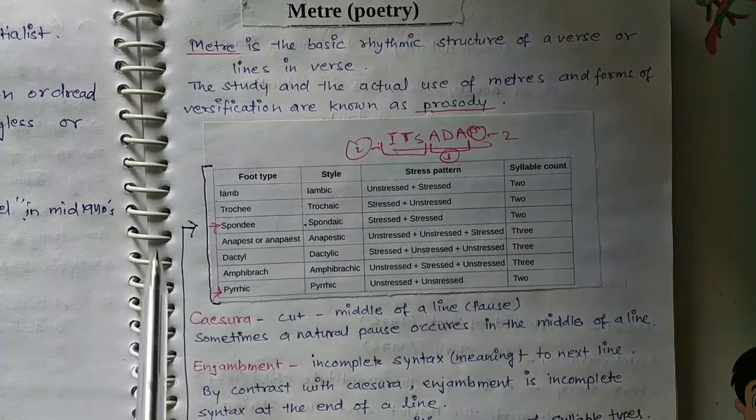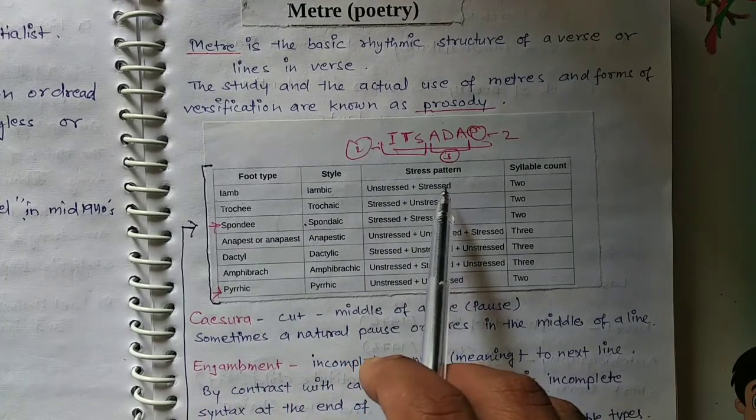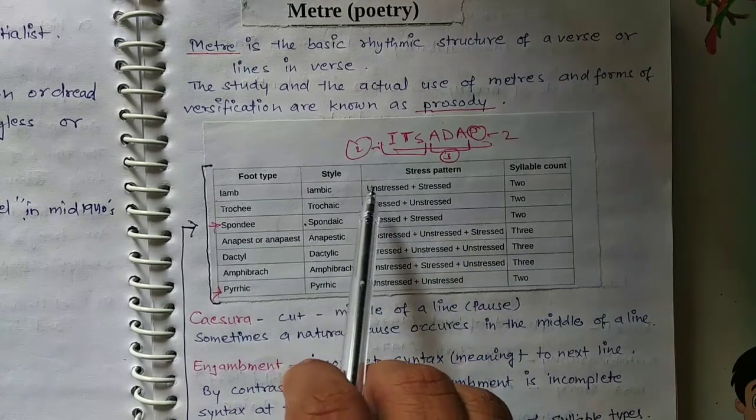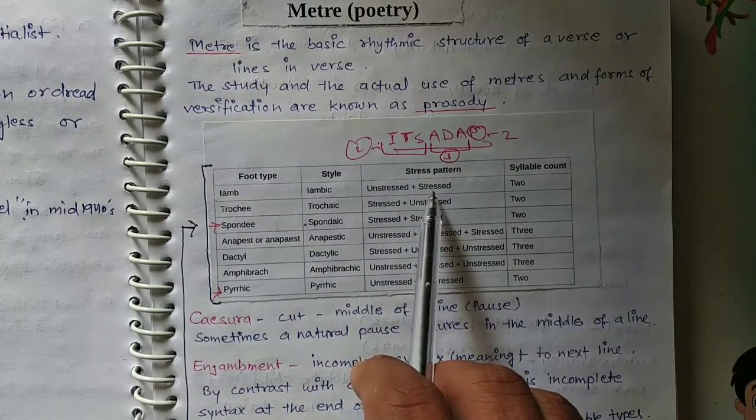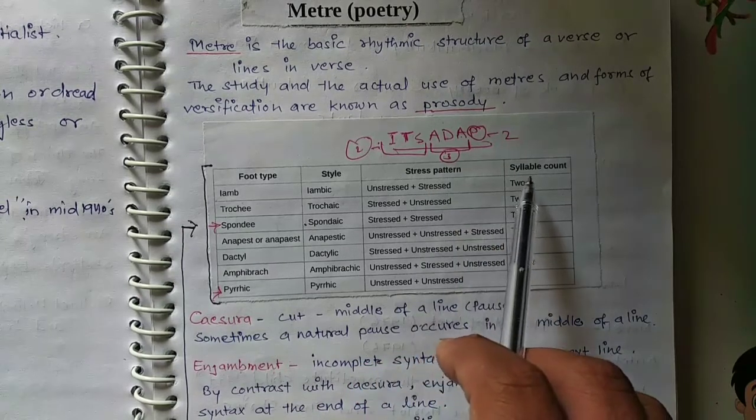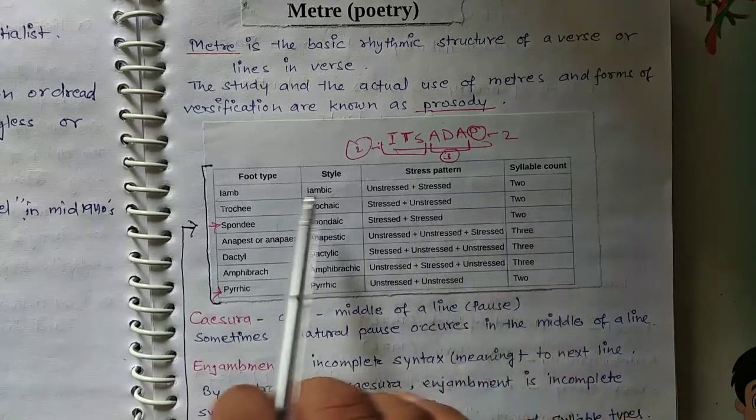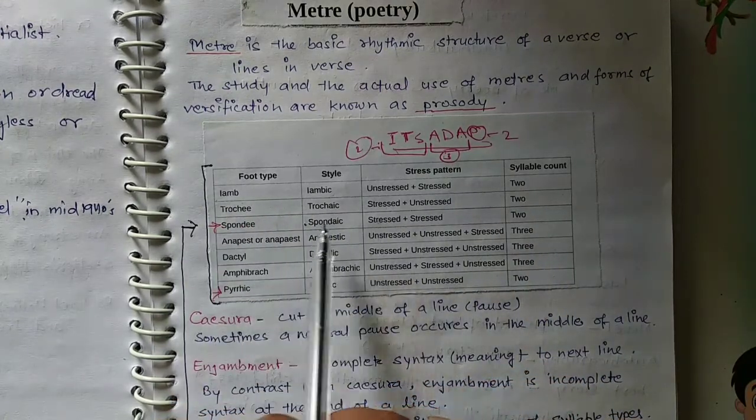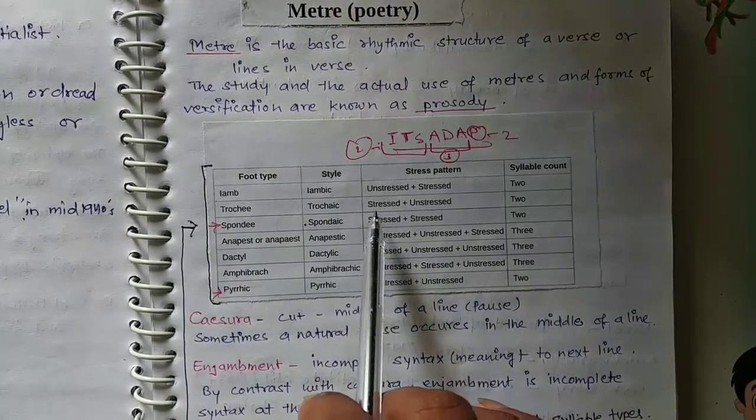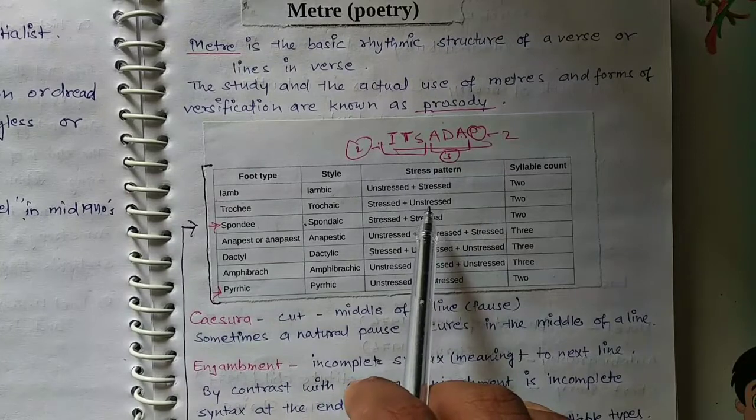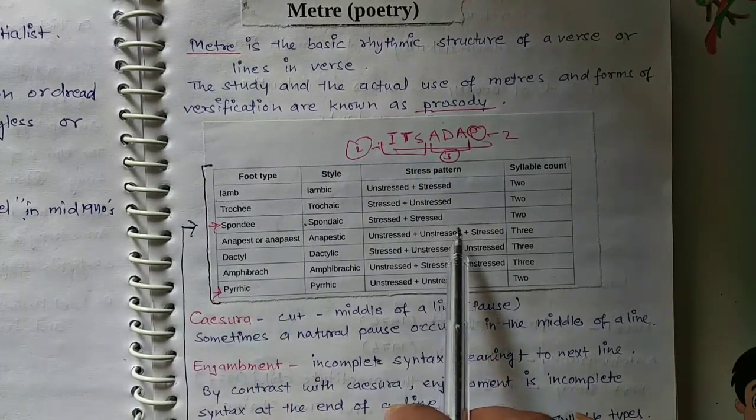Iamb: unstressed and stressed syllable. If first syllable is unstressed and second syllable is stressed, and it has syllable count two syllables, so it is called iamb. Trochee consists of two syllables again, and first one is stressed and second one is unstressed. Spondee is stressed and second one is stressed.